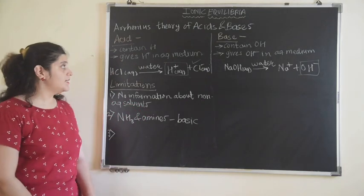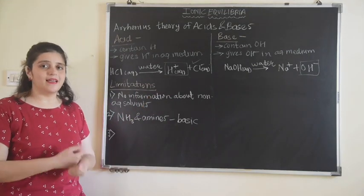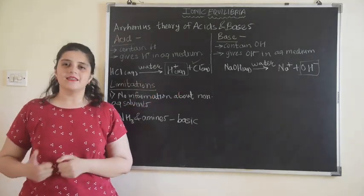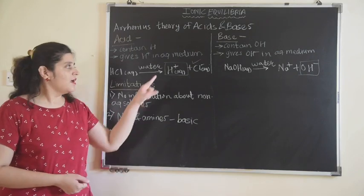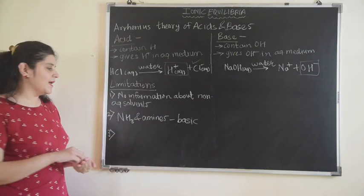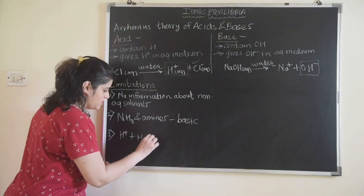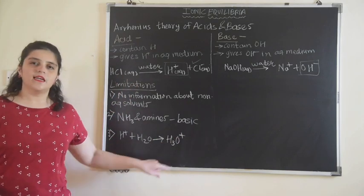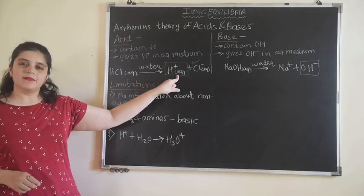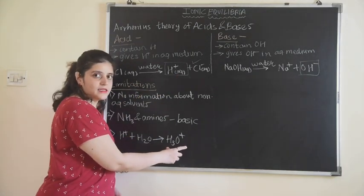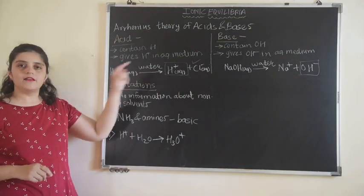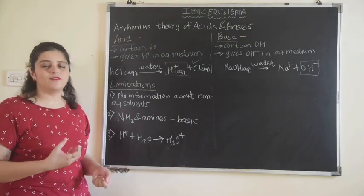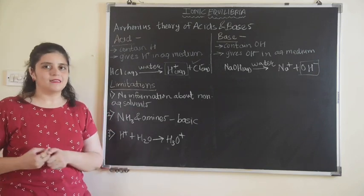The next limitation is: Arrhenius theory says that acid should contain hydrogen and give H⁺ ion. But H⁺ ion will not exist independently — it will always react with H₂O to form H₃O⁺, the hydronium ion. We write H⁺ for simplicity, but in reality it is H₃O⁺. This formation of the hydronium ion was not considered and was not explained by Arrhenius theory of acids and bases.